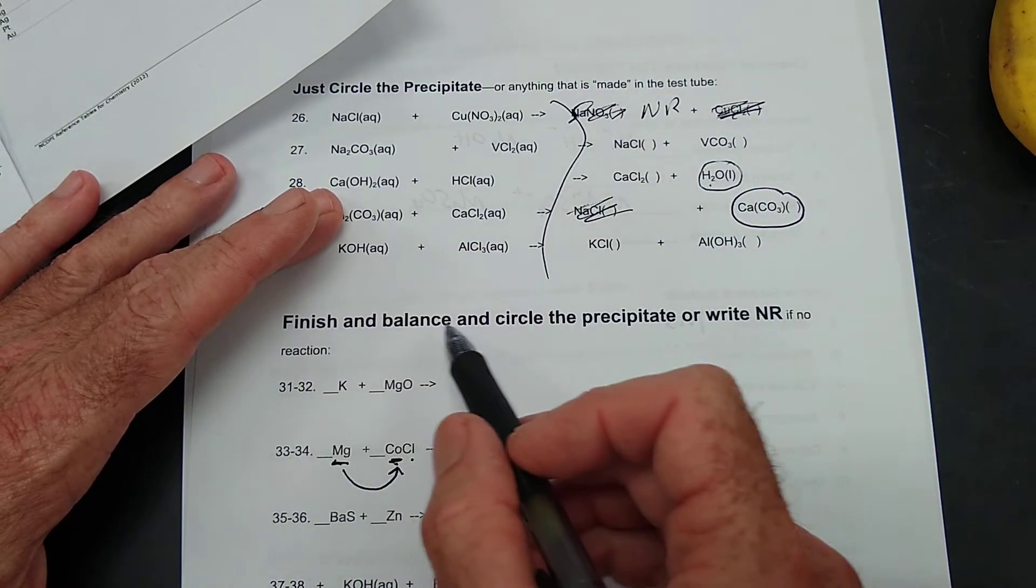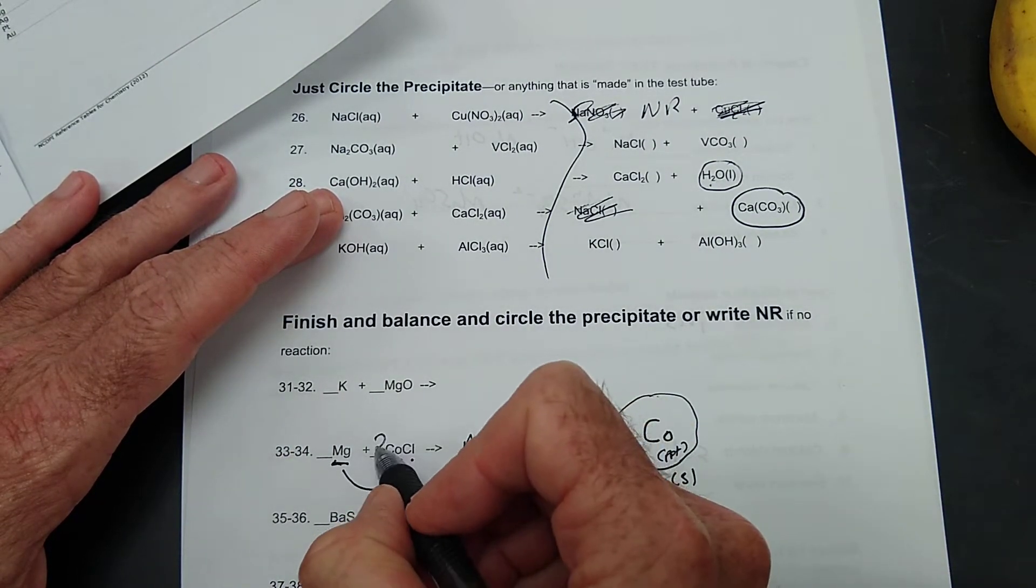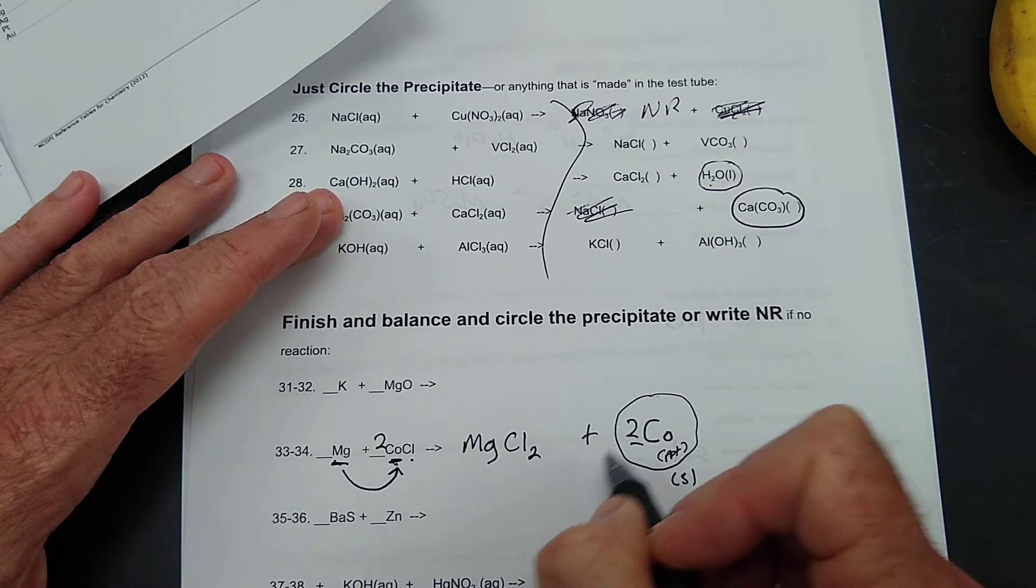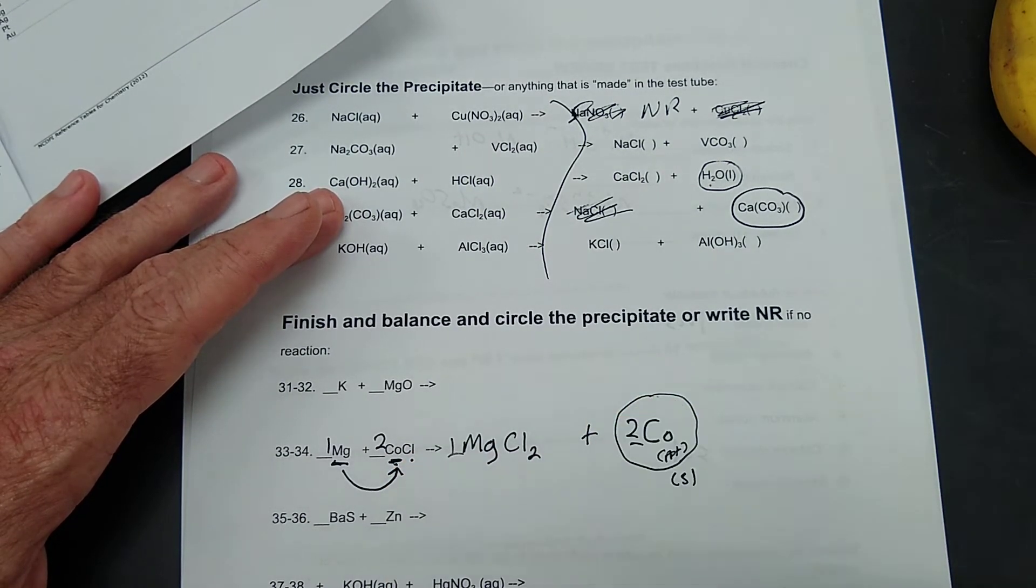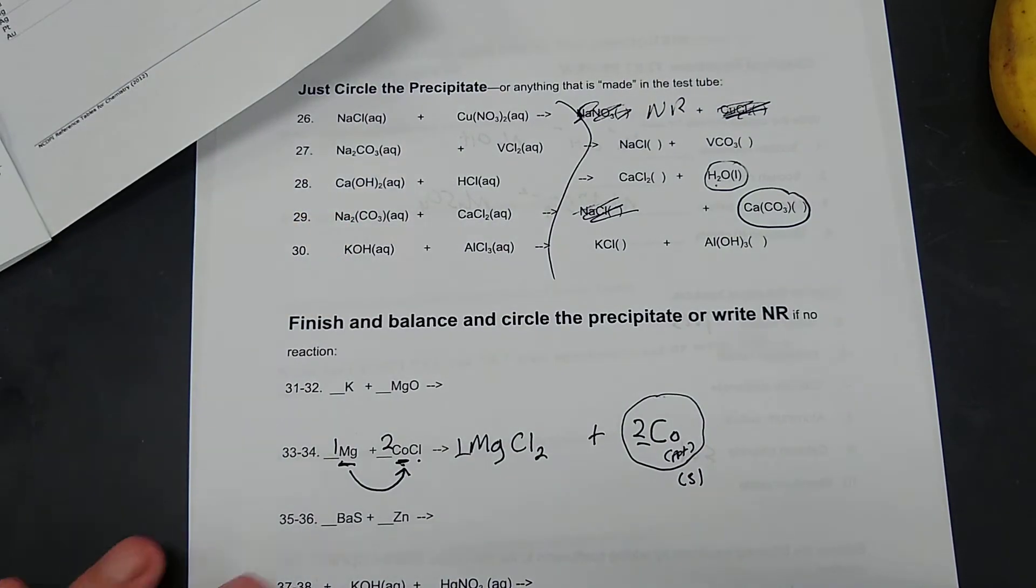Let's see if we finish and balance. Are we going to balance? So we've got two chlorines there, so we need a two there. Two there. Let's see it. One, two, one, two. I hope that helped.